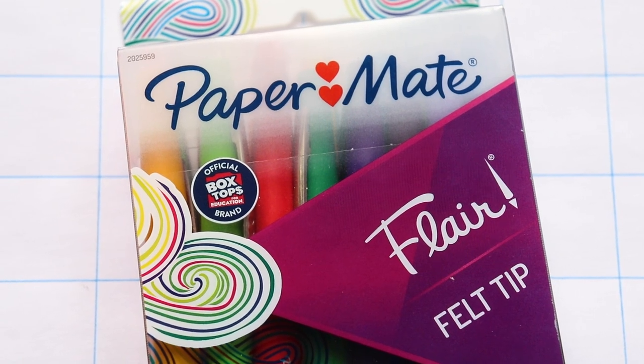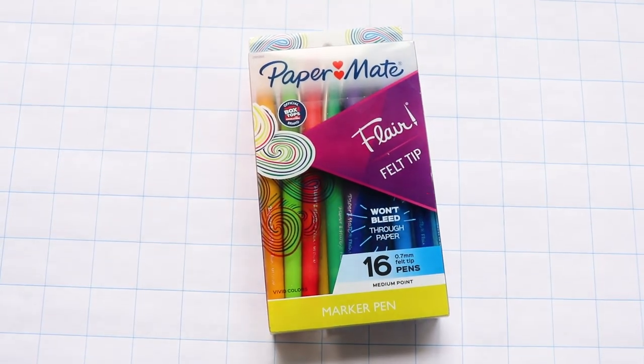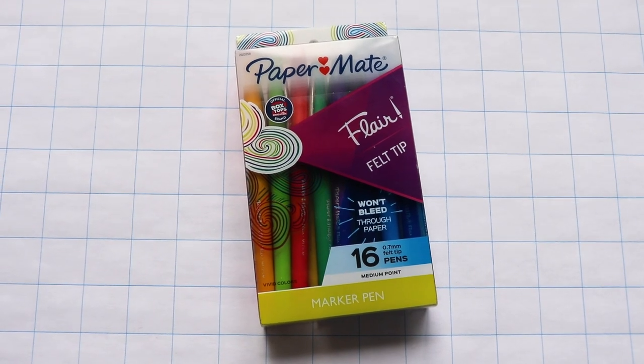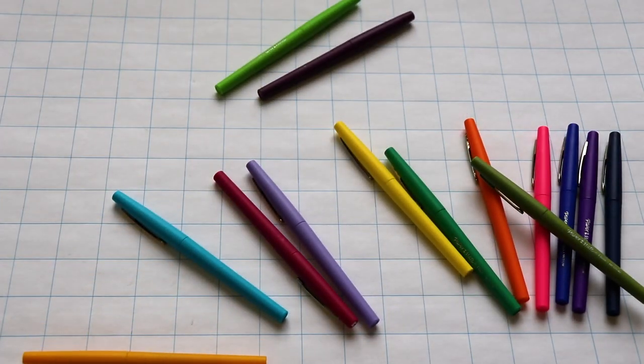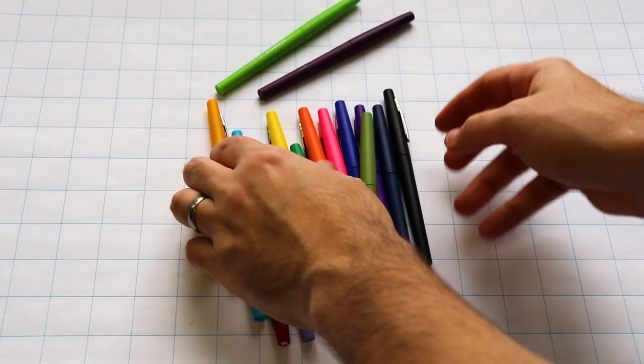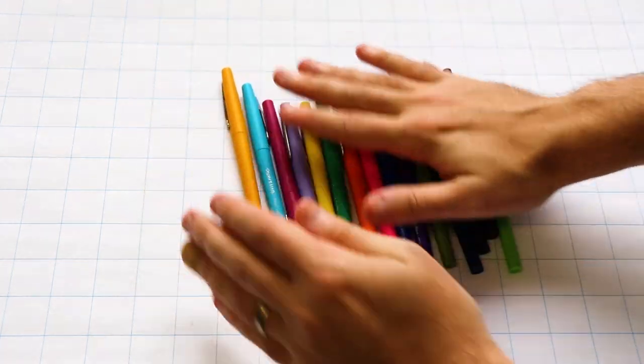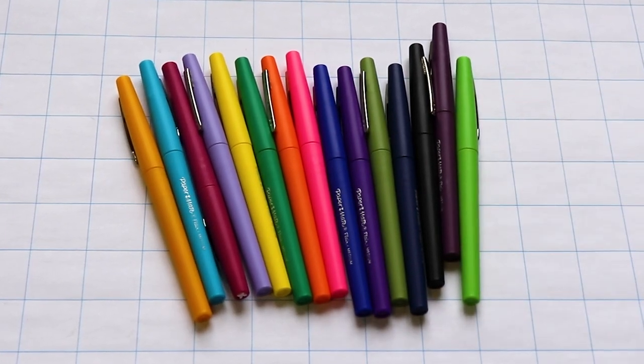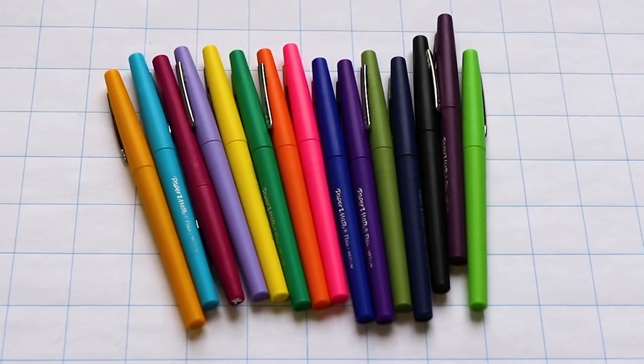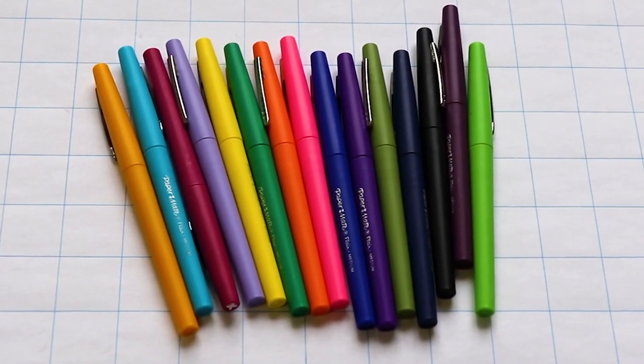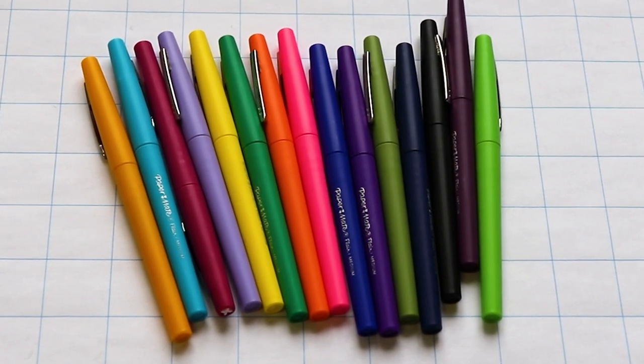So I busted out my set of Papermate Flare pens because I felt like the colors in this set kind of match the map inspiration. Now I really like these pens because they're cheap and disposable, but they also have a good felt tip that doesn't split and fray right away. The other good thing is they're super easy to find at any sort of office supply store.